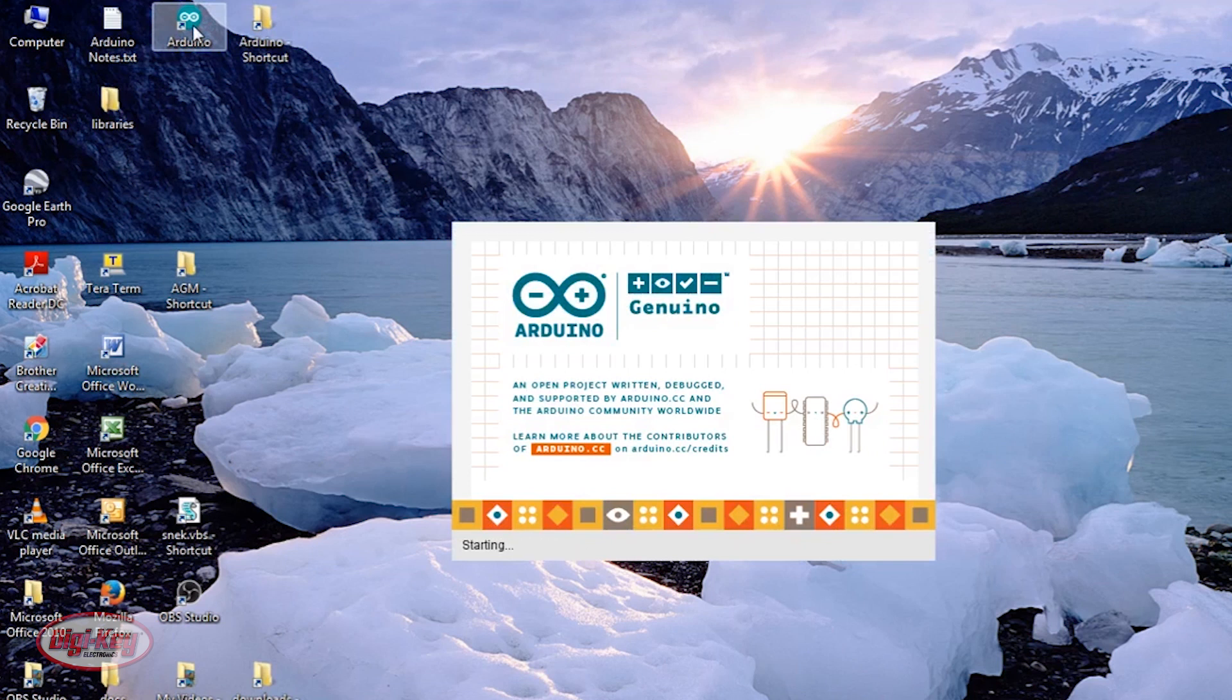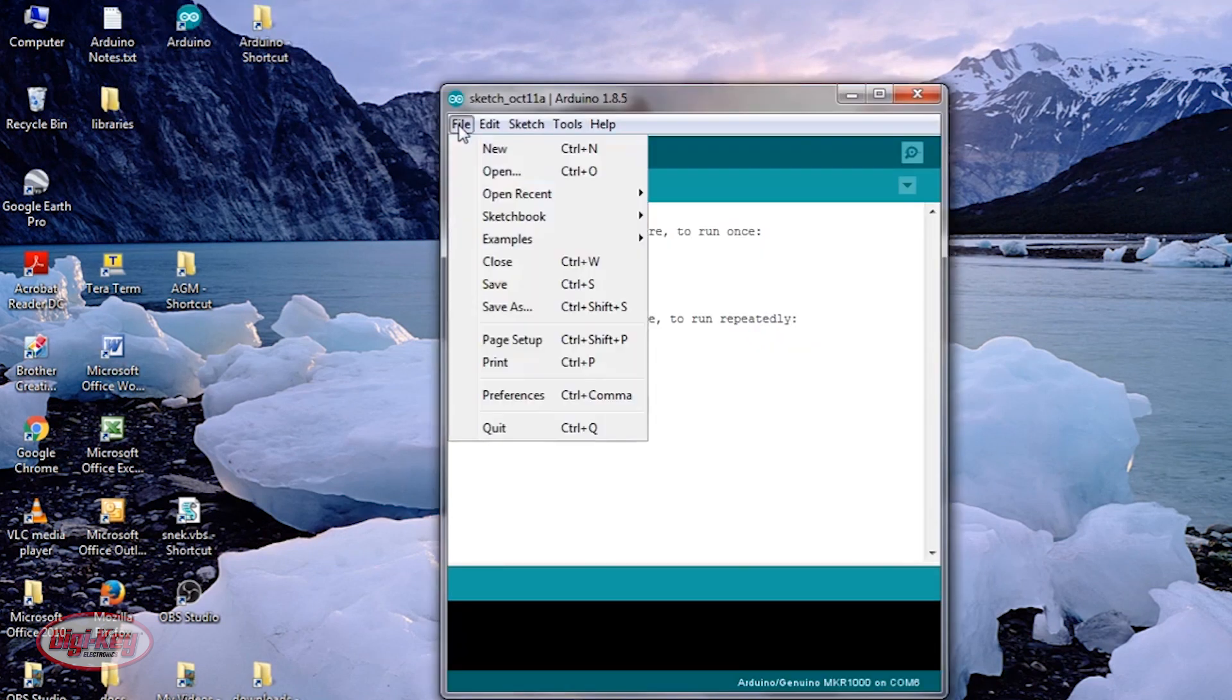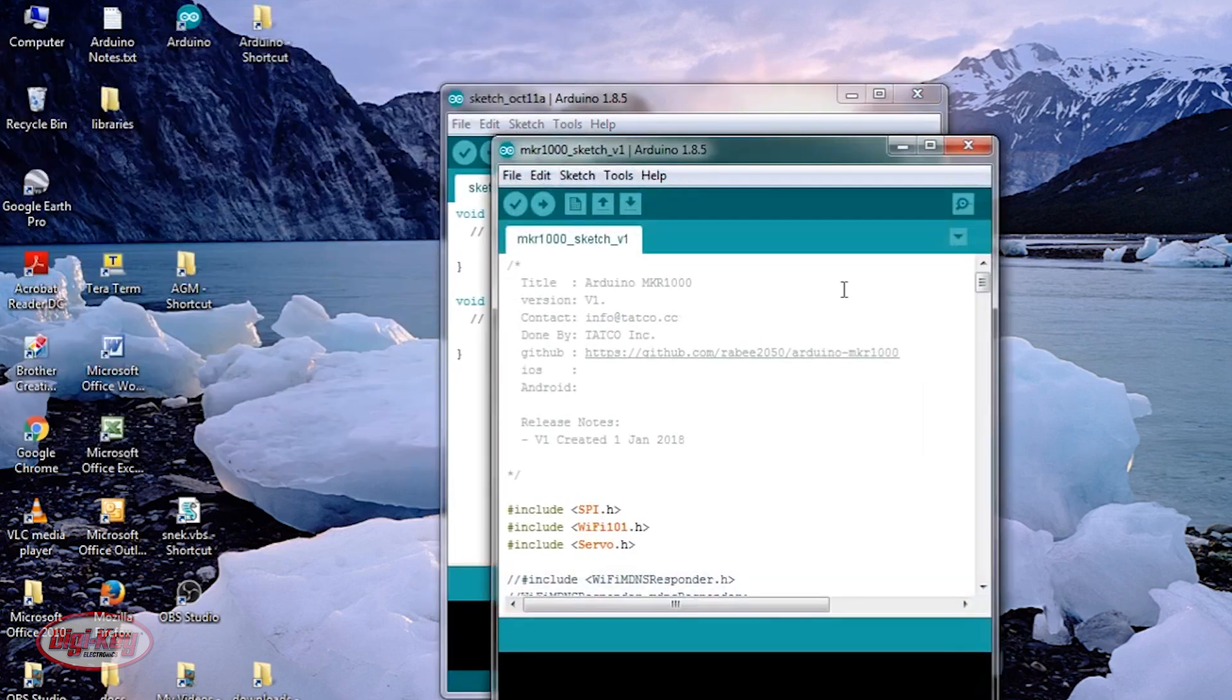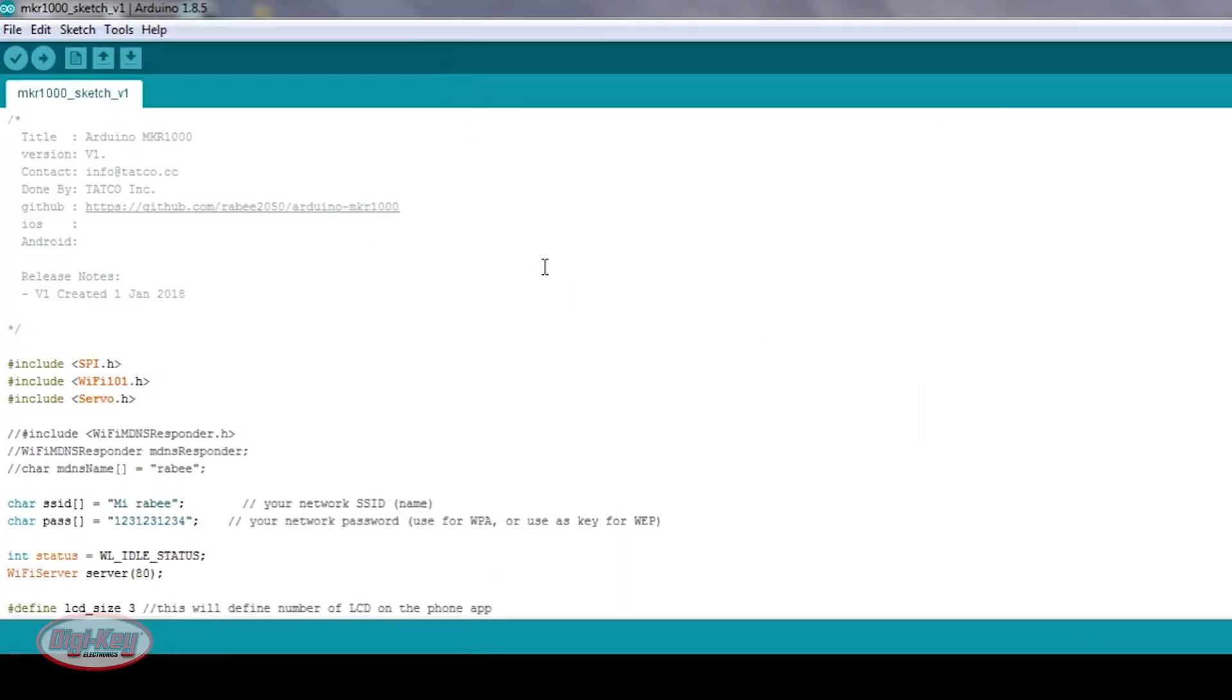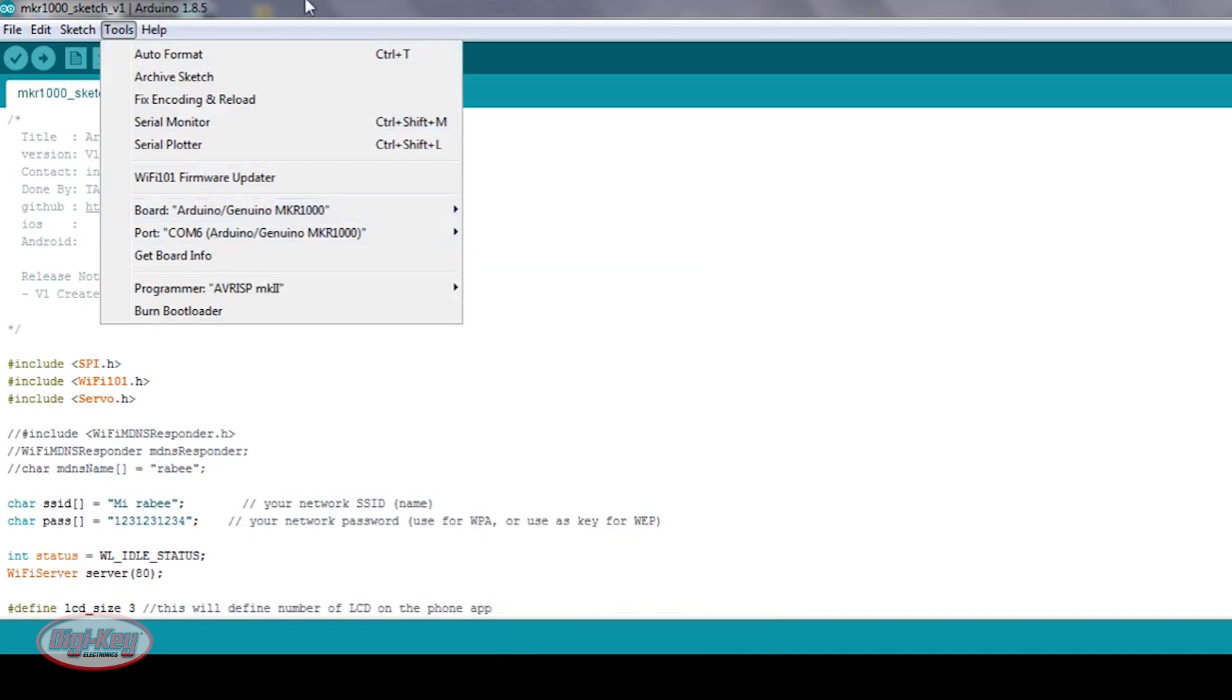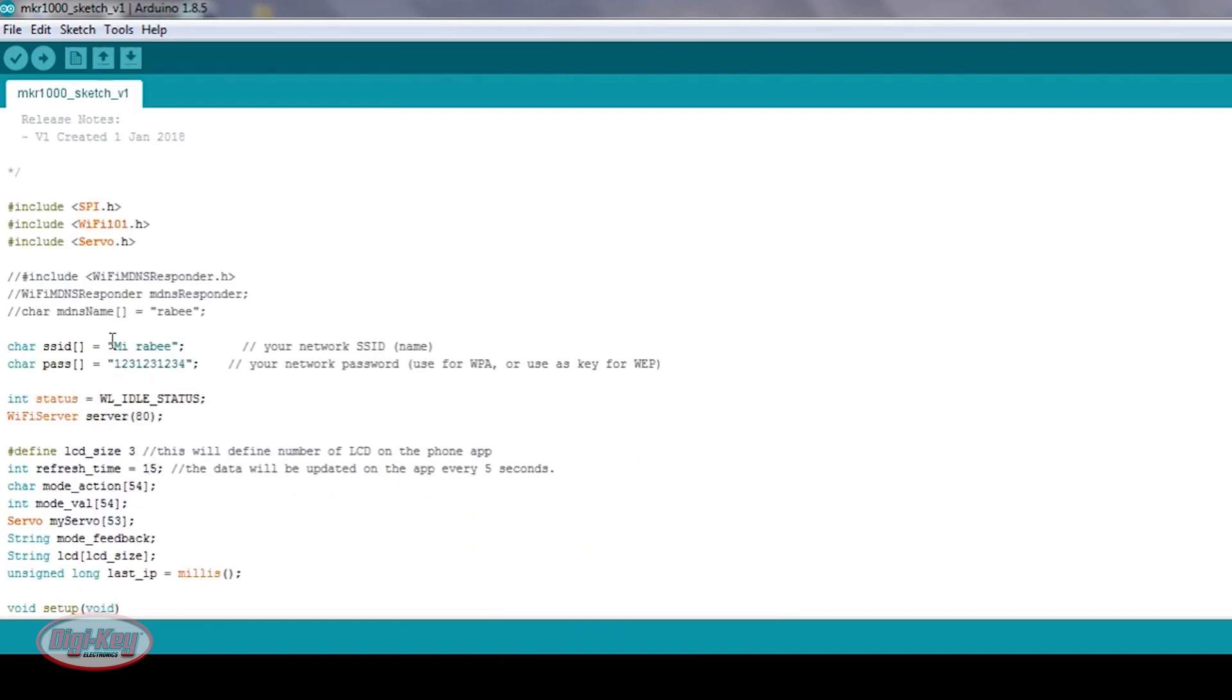I'm going to be using version 1 here. So I will copy this path, open up Arduino, and paste that path I copied. So here's the sketch. I need to make sure I'm using the right board. This is what we're using, the Arduino MKR1000, and the COM port is set up correctly.